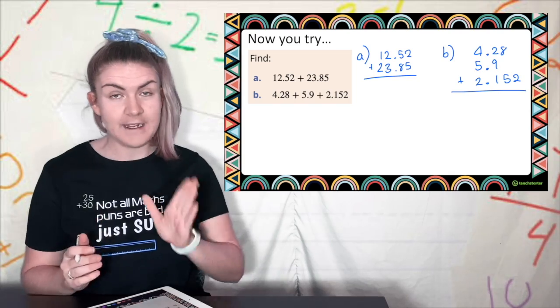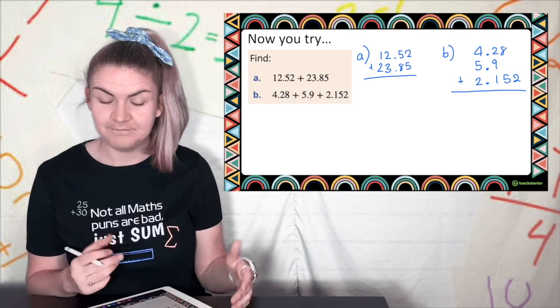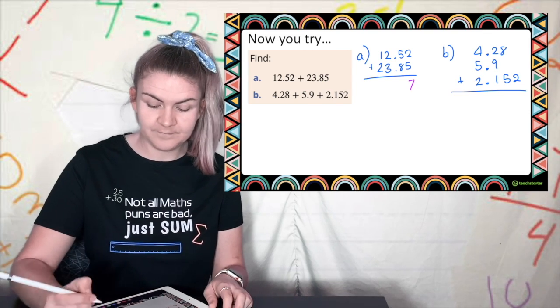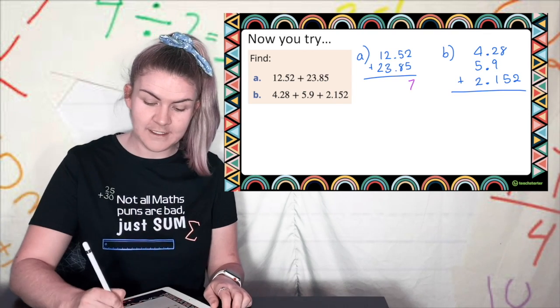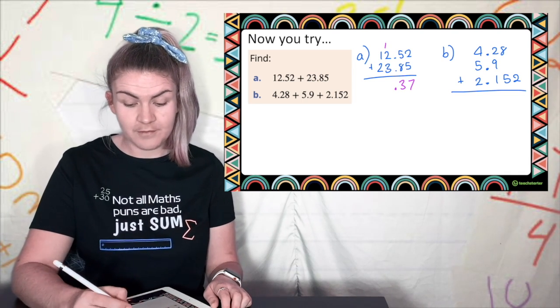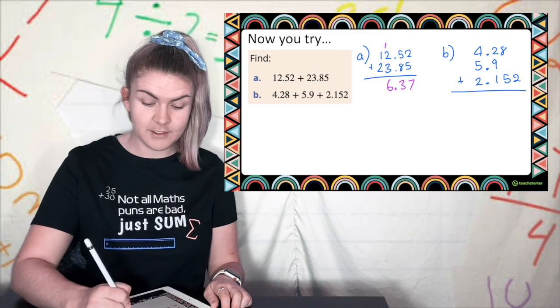I've taken a and I've written it out with my decimal points in a line. Now that they're in a line I just add. 2 plus 5 is 7. 5 plus 8, 13, 3 carry the 1. Next is the decimal point. Pop it in. 1 plus 2, 3 plus 3 is 6. 1 plus 2 is 3.